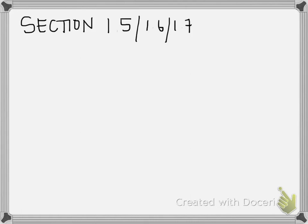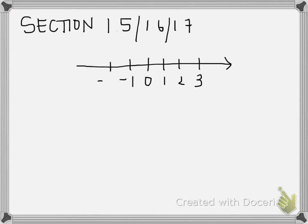So when we do this section, we are not going to be using our calculator. So I want you all to just get comfortable with this a little bit. So if we have a number line, in the middle of that number line we have a zero. Everything to the right of that zero is going to be positive numbers, and everything to the left is going to be negative numbers.